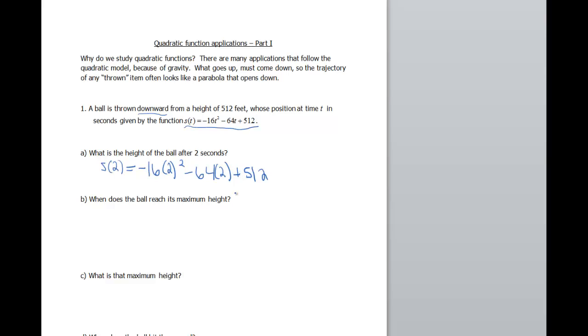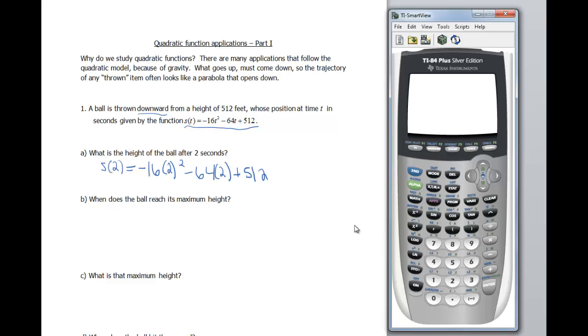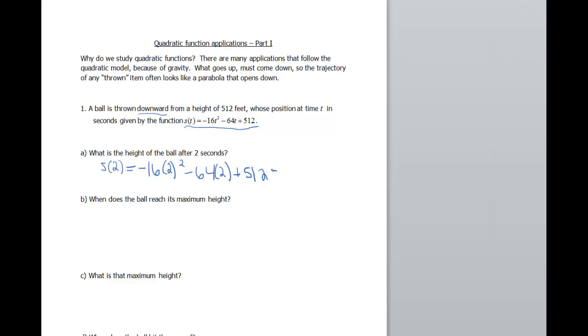So is 2 your input for your time or is 2 the output for your height or position? In this case, definitely it's time because it's measured in seconds. So we wanna do s of 2. But instead of doing all that arithmetic out, I am going to pull out my calculator. Let's get that started. I'm gonna go to the y equals and graph negative 16x squared minus 64x plus 512.